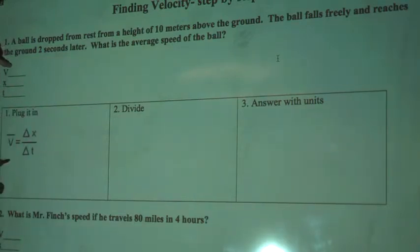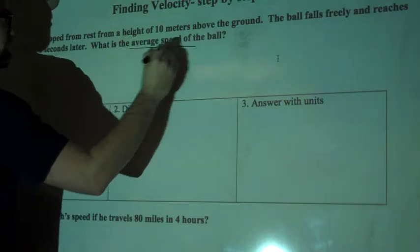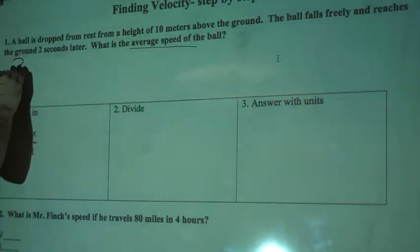First off, we're going to identify our variables. We've got v, velocity. We don't know that. This says, what is the average speed? So I'm going to write a question mark there.